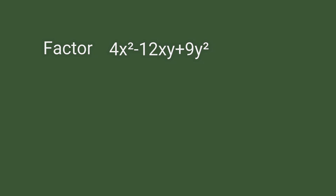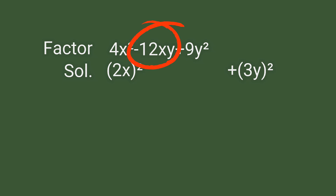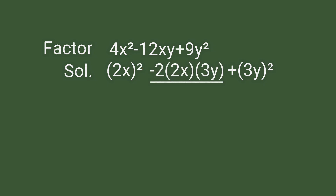Another example: factor 4x squared minus 12xy plus 9y squared. Let's express the first and last terms as squares. For 4x squared, we have the square of 2x. For 9y squared, we have the square of 3y. For the middle term, we need 2 as our multiplier, and factors similar to the first and last terms. So for negative 12xy, we have 2 times 2x times 3y. And our factor is the square of (2x minus 3y).